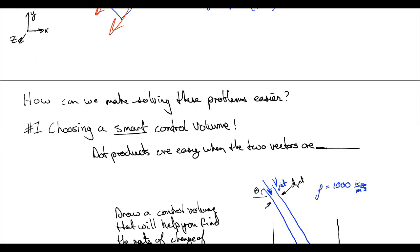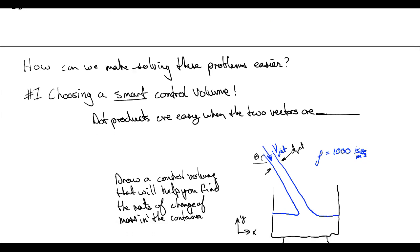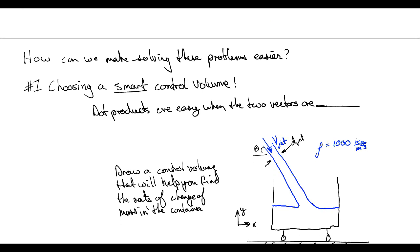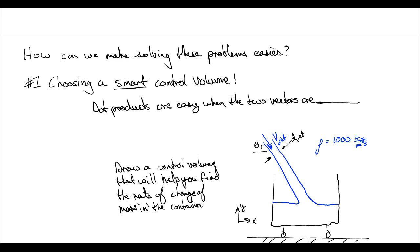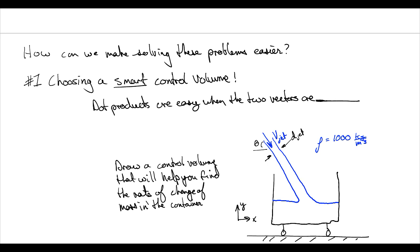So let's talk about ways in which we can make these problems easier on yourself. Number one of all of these techniques we're going to talk about is choosing a smart control volume. Dot products are easy when the two vectors are — it's either perpendicular or parallel. Parallel is what we're hoping for. Many times, problems become much simpler if your fluid can enter or leave perpendicular to a surface.